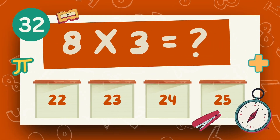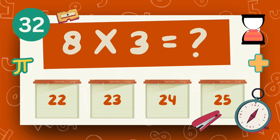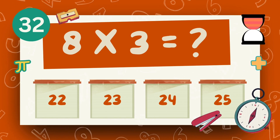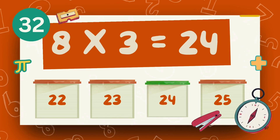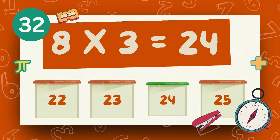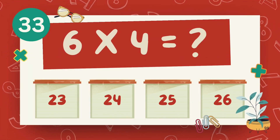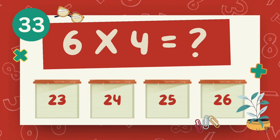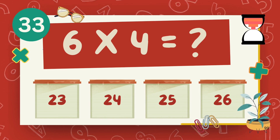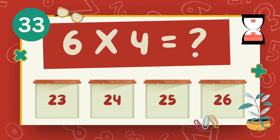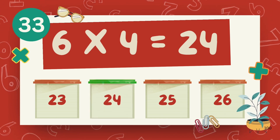What is 8 multiply 3? What is 3 multiply 3? The answer is 24. What is 6 multiply 4? The answer is 24.